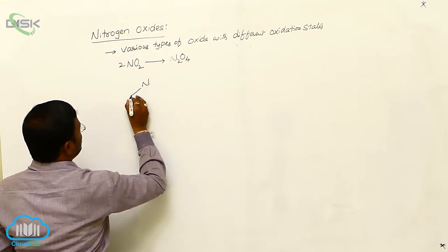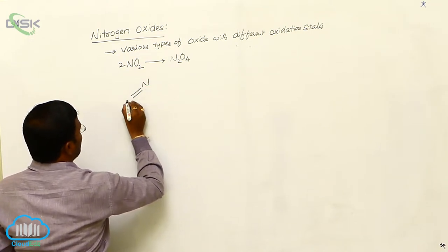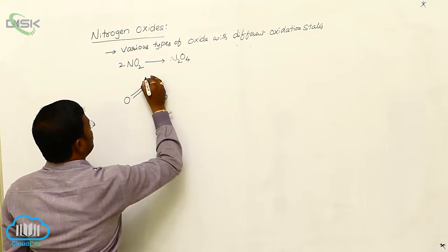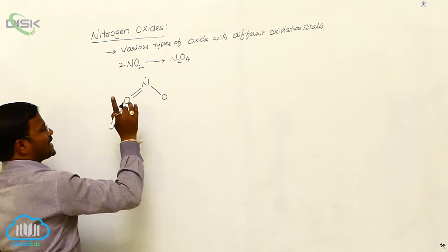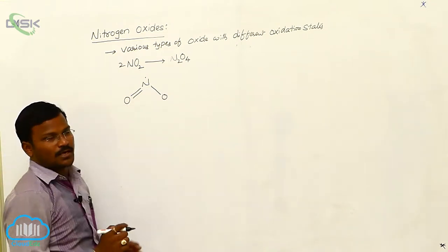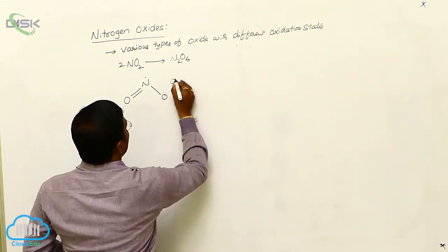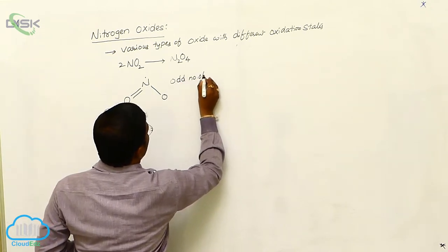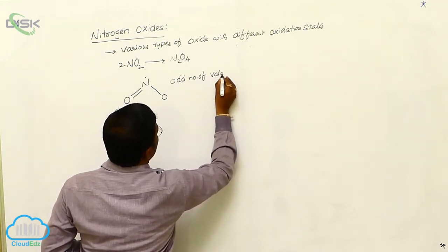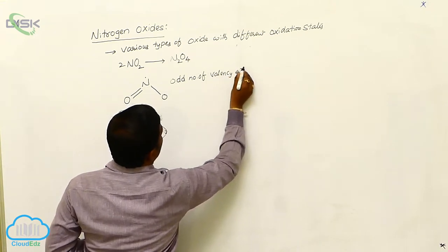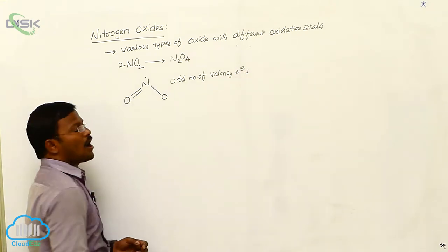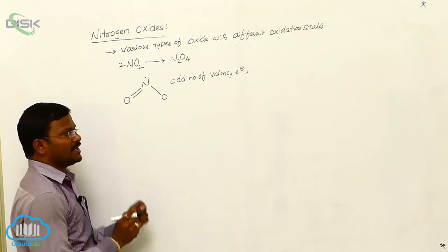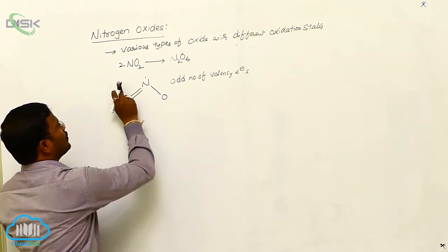When we represent the nitrogen dioxide structure, it shows that a single electron is expected to be present on the nitrogen atom — that means an odd number of valency electrons. Due to the presence of an odd number of valency electrons, it decreases the stability of nitrogen dioxide.